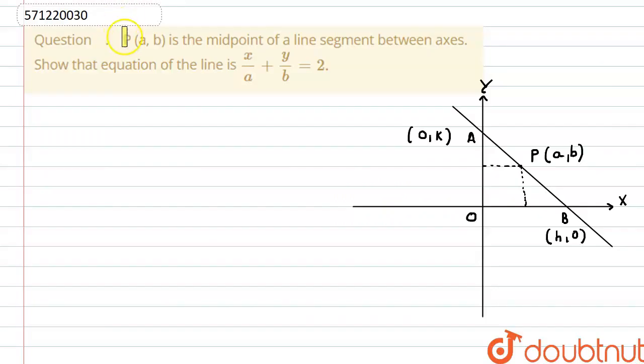Hello everyone, our question is: P(a,b) is the midpoint of the line segment between the axes. Show that the equation of line is x by a plus y by b is equal to 2.